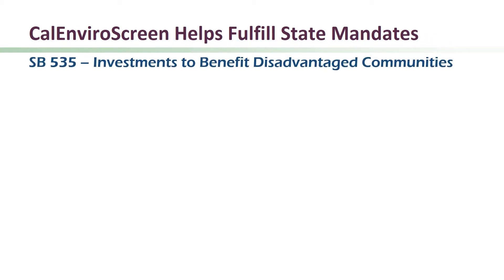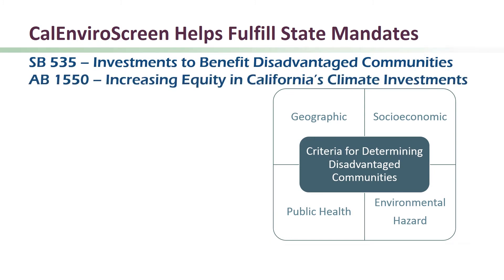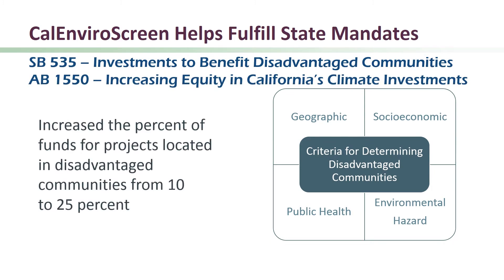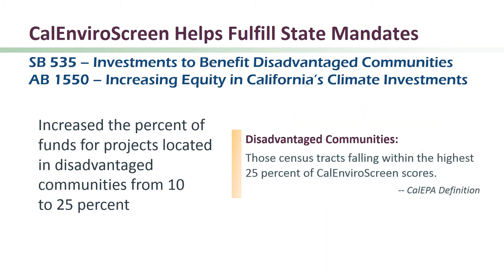In 2012, the governor signed into law Senate Bill 535 as part of the state's greenhouse gas reduction plan to fund projects in disadvantaged communities. SB 535 directed CalEPA to identify disadvantaged communities in the state based on geographic, socioeconomic, public health, and environmental hazard information. More recently, the governor signed into law Assembly Bill 1550, which increased the percent of funds for projects located in disadvantaged communities from 10 to 25 percent. CalEPA has designated the disadvantaged communities as those census tracts falling within the highest 25 percent of CalEnviroScreen scores.